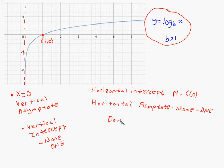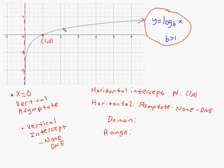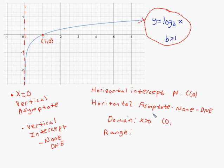Other common questions involve domain and range, and again the intent is to picture the graph rather than memorize facts. The domain of a logarithm — without any shifting — is how far left and right the graph goes. It goes to the right forever but never takes on an x-value of 0. So the domain starts just after 0 and includes all x-values to the right: written as x greater than 0, or in interval notation (0, ∞), with a parenthesis at 0 since it's not included and a parenthesis at infinity since you can't reach it.